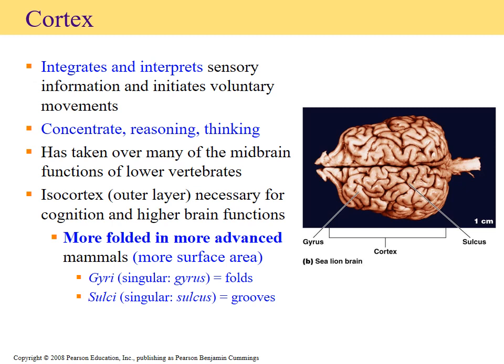When we're talking about the cortex, we're looking at the different folds and grooves on the outer surface of the brain. You can see the gyri, which are the folds, and the sulci — or sulcus in singular — which are the grooves made on the brain surface. The folds are extremely important because as we make more gyri, we increase the surface area of the cortex, allowing us to recruit more neurons and synaptic connections, which leads to higher function and complexity.